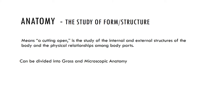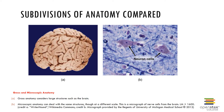Gross Anatomy is the study of structures large enough to be seen with the naked eye. Microscopic Anatomy, which can be further subdivided into cytology and histology, is the study of structures that are too small to be seen with the naked eye. When you get into lab, you will study histology in more detail. Here is an example of gross anatomy, where we could look at large structures such as the brain, the heart, and the stomach.